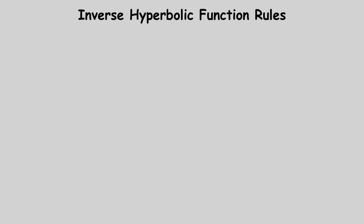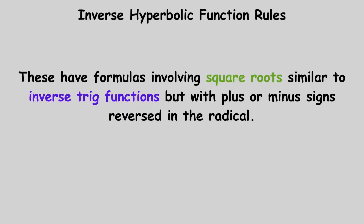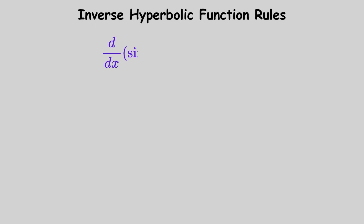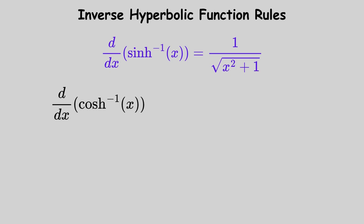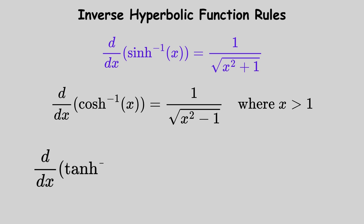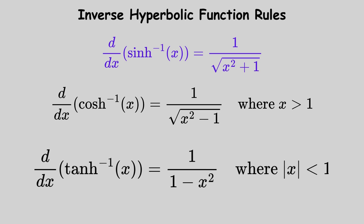Inverse hyperbolic function rules: these have formulas involving square roots similar to inverse trigonometric functions, but with plus or minus signs reversed in the radical. For inverse hyperbolic sine, the derivative is 1 divided by the square root of x squared plus 1. For inverse hyperbolic cosine, where x is greater than 1, it is 1 divided by the square root of x squared minus 1. For inverse hyperbolic tangent, where the absolute value of x is less than 1, it is 1 divided by 1 minus x squared.